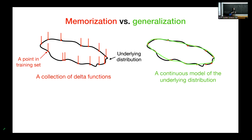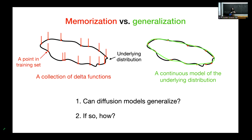The second possibility is that the diffusion model is learning a continuous model of the underlying distribution — in other words, generalizing beyond the training examples. In this work, we ask which one of these two strategies diffusion models take. The short answer is both. Sometimes they memorize, and sometimes they generalize. The memorization case is not interesting, so we focus on the generalization case and ask: how is it that they can generalize despite the curse of dimensionality with finite data?